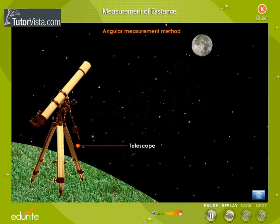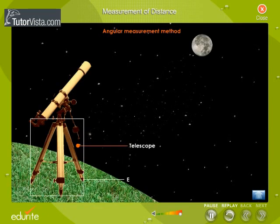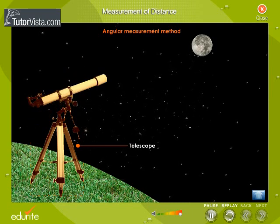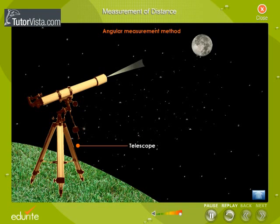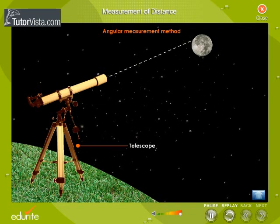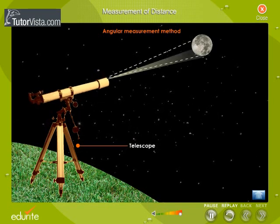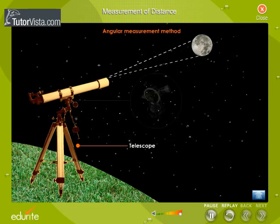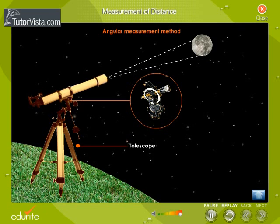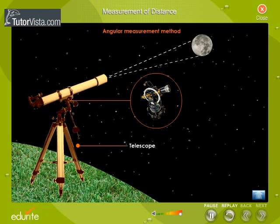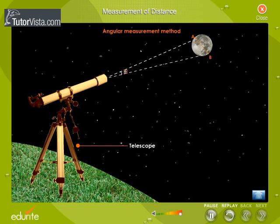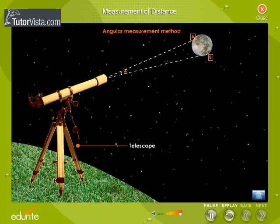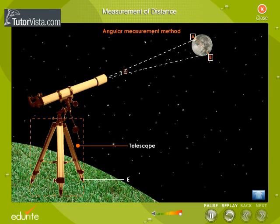Observe the Moon with the help of an astronomical telescope from a point E on the surface of the Earth. Focus the telescope on a part of the Moon as shown here, and then focus the telescope on the diametrically opposite part of the Moon. Measure the angle through which the telescope is moved. Let theta be the angle subtended by two diametrically opposite points A and B on the Moon at the point E.